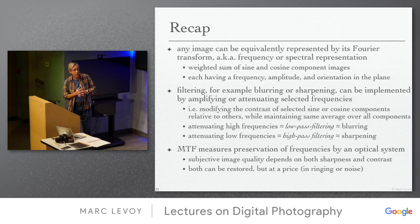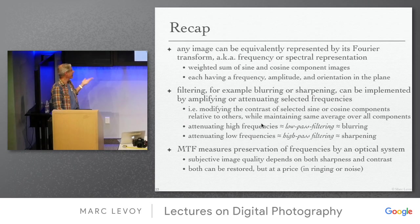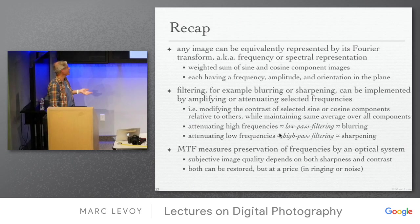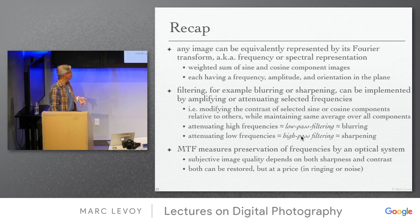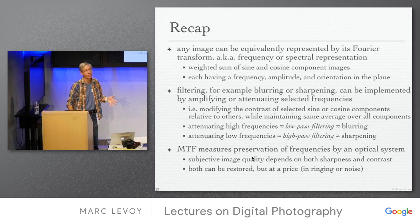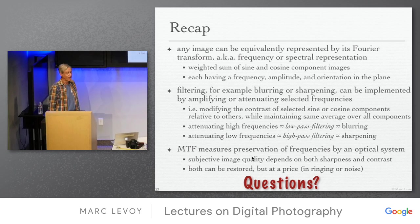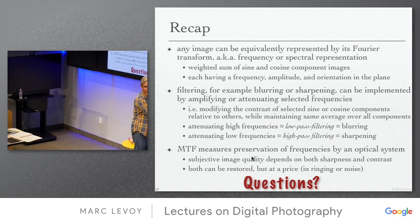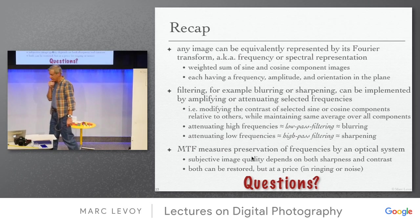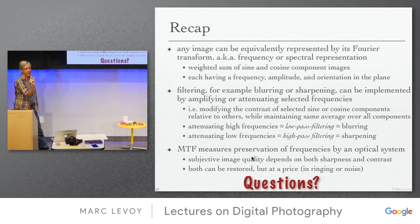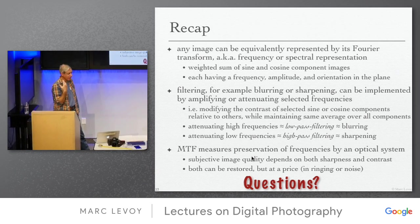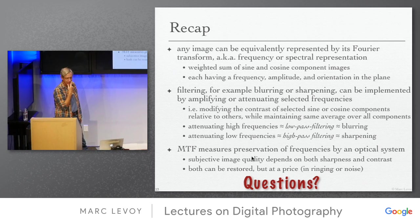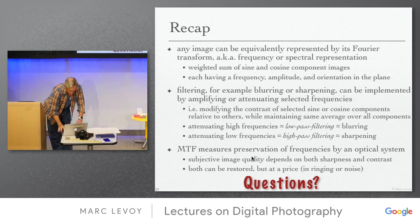To summarize: any image can be described as a sum of sines and cosines. We can enhance or reduce high or low frequencies. Attenuating high frequencies is sometimes called low-pass filtering; attenuating low frequencies is high-pass filtering — or blurring and sharpening. The modulation transfer function describes how well an optical system preserves frequencies. An optical brick-wall filter would be very hard to build physically — an interference filter is more selective, and the steep rolloffs are hard to achieve.